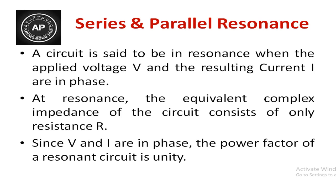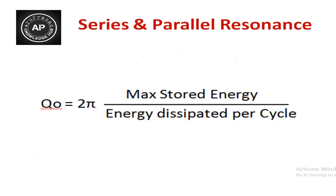At resonance, the equivalent complex impedance of the circuit consists of only resistance. The total impedance is equal to only the resistor element. Since V and I are in phase, the power factor of a resonance circuit is unity. For both series and parallel circuits, the power factor is unity, a constant value of one.